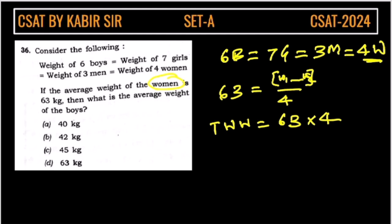Now what we have to find, we have to find the average weight of boys. So this will be equal to the sum of 6 boys. The weight of 6 boys, how much is the weight of women? 4 women's weight is equal to this one, so this will be 63 into 4.